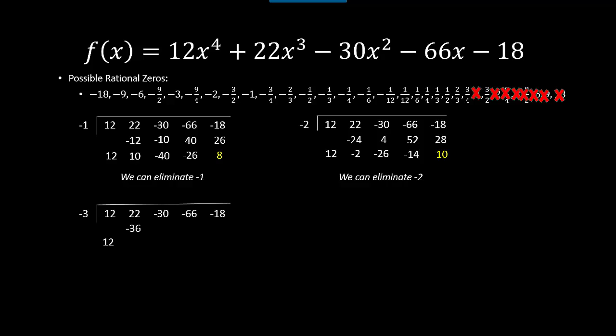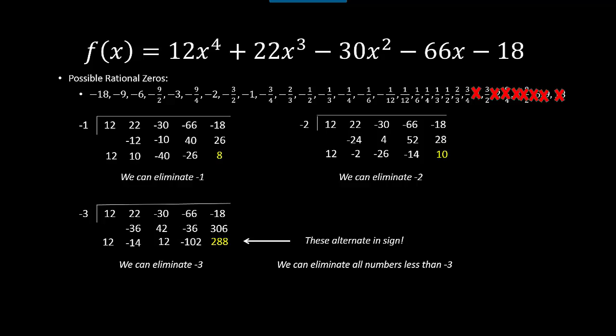Trying −3: the synthetic division gives a remainder of 288, so −3 is also not a zero. But notice the bottom row alternates in sign: positive, negative, positive, negative, positive. That means we can eliminate more than just −3 — we can eliminate anything on the list less than −3. From these three trials with negative values, we've eliminated another 7 numbers off the list.